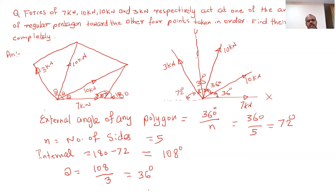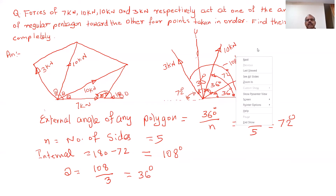Each theta represents 36°. We have a concurrent force system where 7 kN is along the reference (0°), 10 kN acts at 36°, the next 10 kN acts at 72°, and 3 kN acts at 108° from the X-axis.